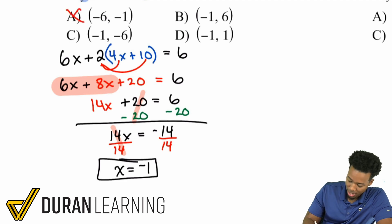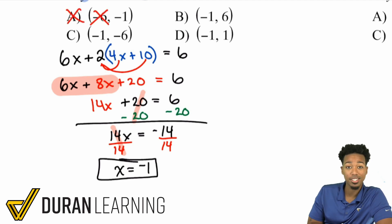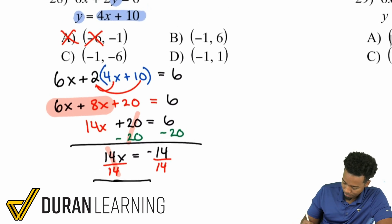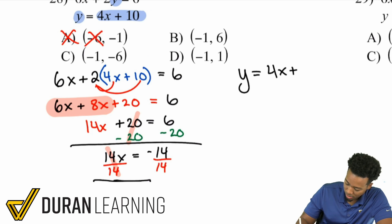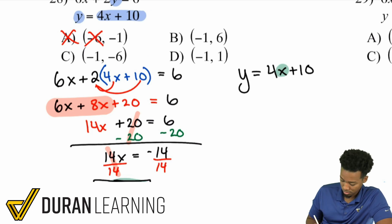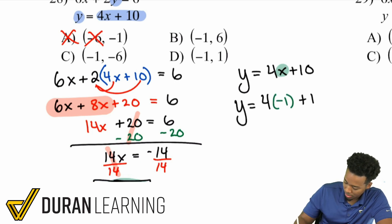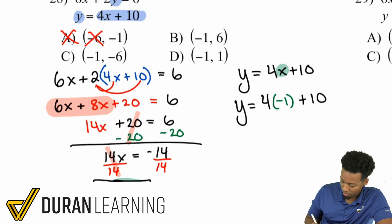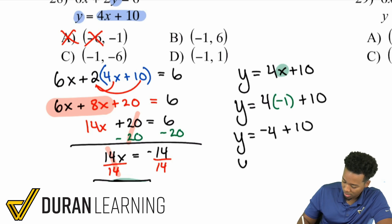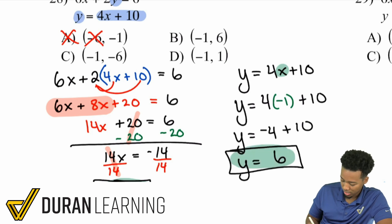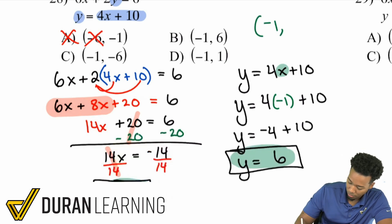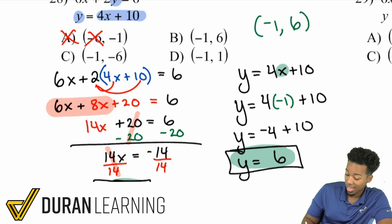Plugging X equals negative 1 back into Y equals 4X plus 10: Y equals 4 times negative 1 plus 10. That's negative 4 plus 10, which gives Y equals positive 6. So the final answer is negative 1 comma 6, which is answer choice B.